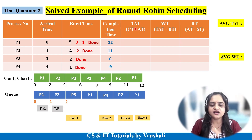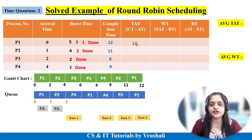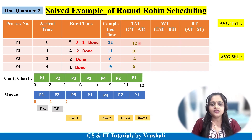Now find the turnaround time using the formula: completion time minus arrival time. Turnaround time of P1: 12 minus 0 equals 12. For P2: 11 minus 1 equals 10. For P3: 6 minus 2 equals 4. For P4: 9 minus 4 equals 5.